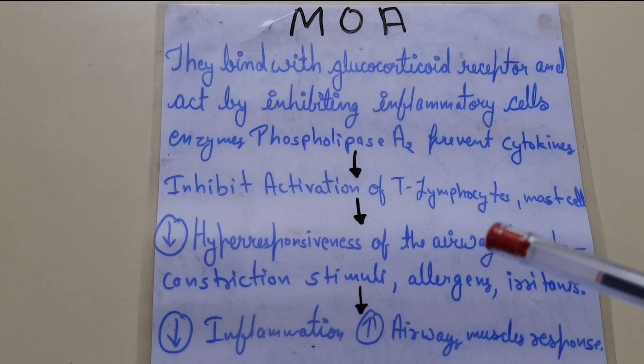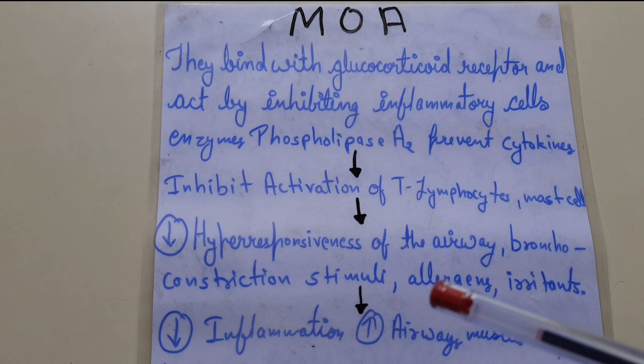Corticosteroids inhibit activation of mast cells, which reduces airway hyper-responsiveness and bronchoconstriction. The response to allergens and irritants is also reduced. As a result, inflammation decreases and airway muscles become more dilated, allowing easy air transport.